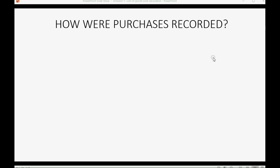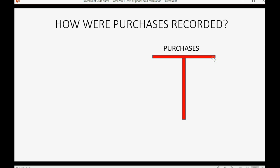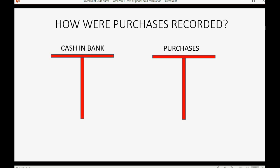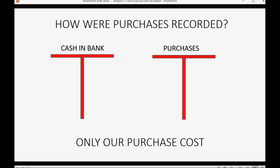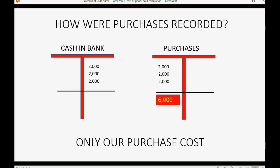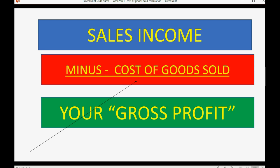Purchases were recorded in a separate account each time we purchased inventory, matched to a deduction of the bank account every time we paid. In the purchases account we only put what we paid for the merchandise purchased — a debit on the debit side of purchases to track everything we paid, and a credit side of cash in bank to track each reduction. At the end of the month we would get the total purchases to help us find the cost of goods sold.